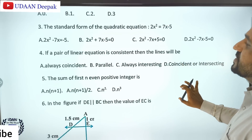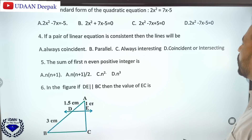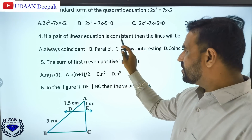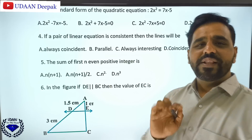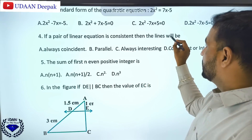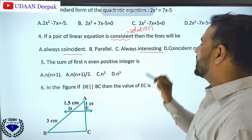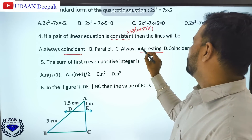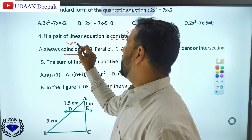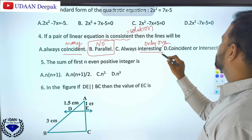If a pair of linear equations is consistent, the lines will be coincident or intersecting. Consistency means having a solution. Intersecting lines have only one solution, coincident lines have infinitely many solutions, and parallel lines have no solution. Since parallel lines have no solution, they are inconsistent. Therefore, the answer is option D — the linear equations can be coincident or intersecting.